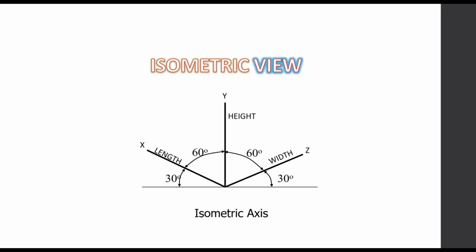In AutoCAD, we can draw these axes by using the F5 button. We can change the cursor to x, y, and z-axis using the F5 option. Now let's start drawing.